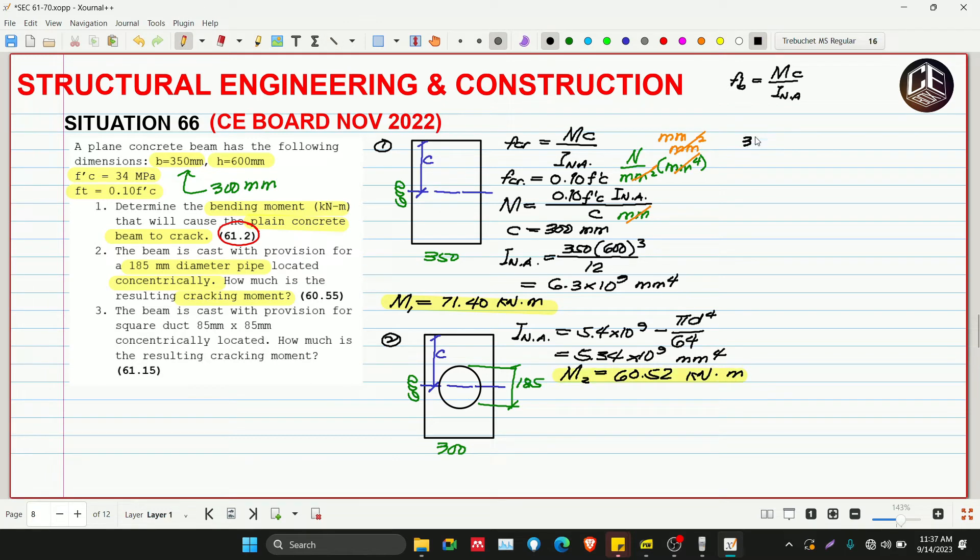Lastly, number 3: the beam is cast with provision for a square duct 85 by 85 millimeters concentrically located. How much is the resulting cracking moment? It's the same as problems 1 and 2. What changed is the shape - from circular to square hollow. 85 by 85, it's square, concentrically located at the center.